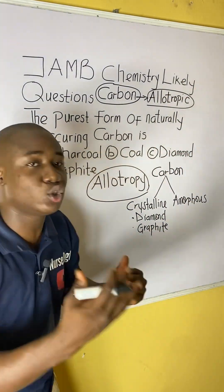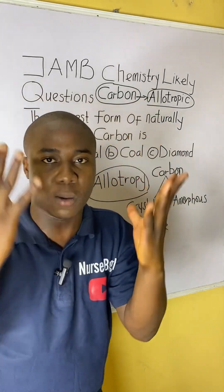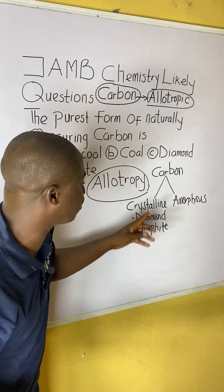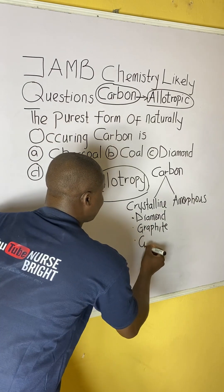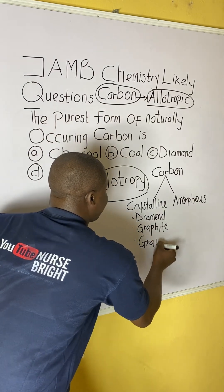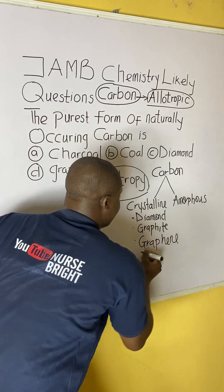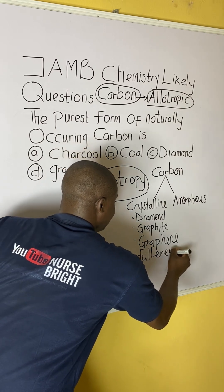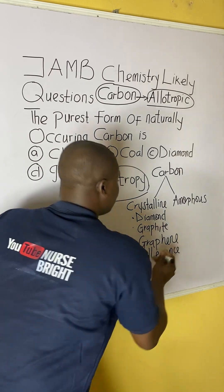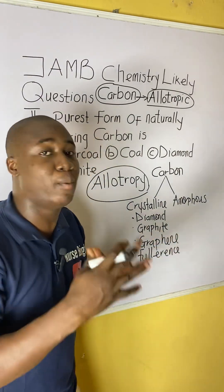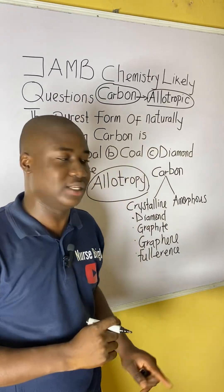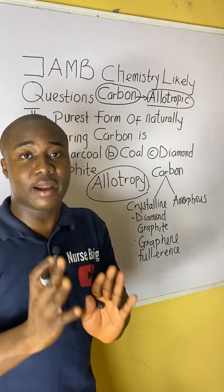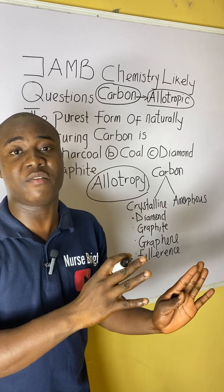It is important for you to know the examples of substances under the crystalline allotropic form of carbon, which include diamond, graphite, and another called fullerene — specifically, you can call them Buckminsterfullerene. So, these are majorly the crystalline allotropic forms of carbon, though there are others.